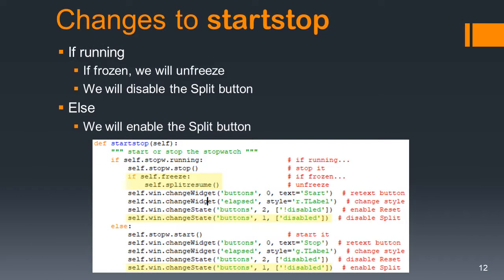Here are the changes we need to make to start_stop - it's a little more involved. If we're running, we have to check to see if we're frozen. If we're frozen, then we need to unfreeze, and then we're also going to disable that split button. If we're running and someone clicks on the start_stop button, they want to stop it - that's why we have to unfreeze and disable the split button. Else, if we're stopped, we want to start it, and we're going to enable the split button.